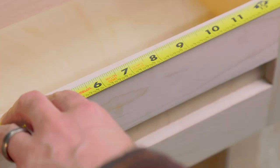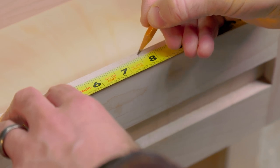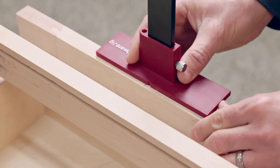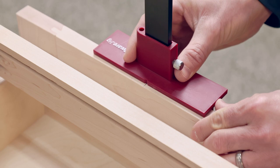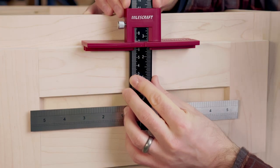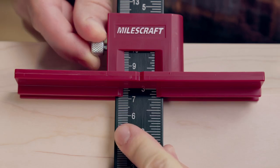When installing hardware on drawers, simply mark a center line on the top of the drawer and rest the main stop so that it aligns with the center line. Easily set your depth on the main ruler to the desired location and drill your holes.